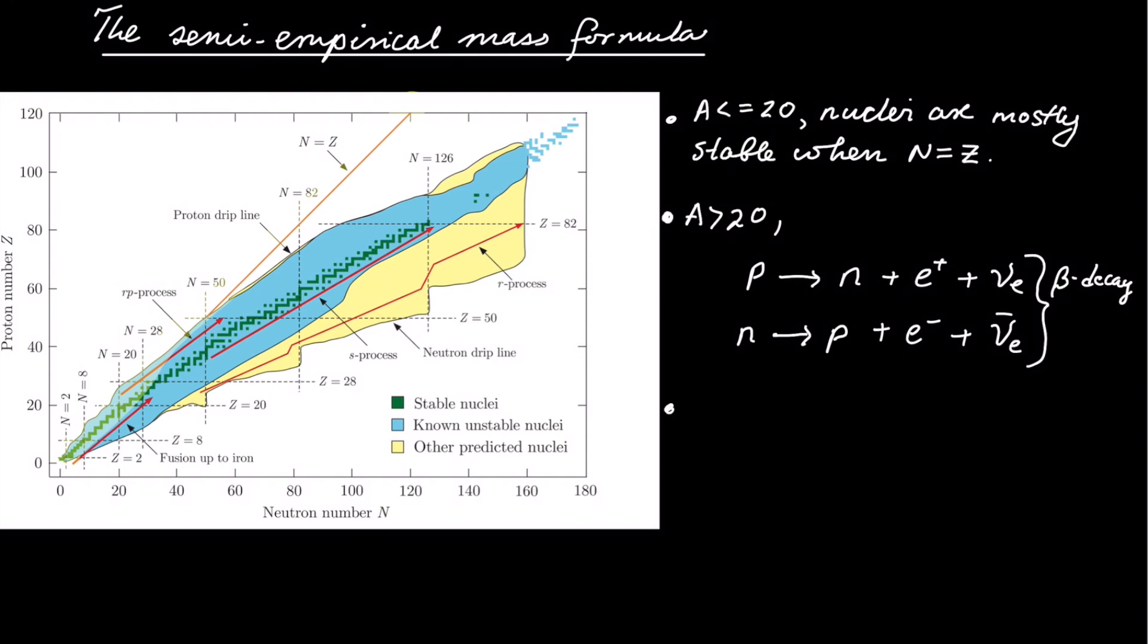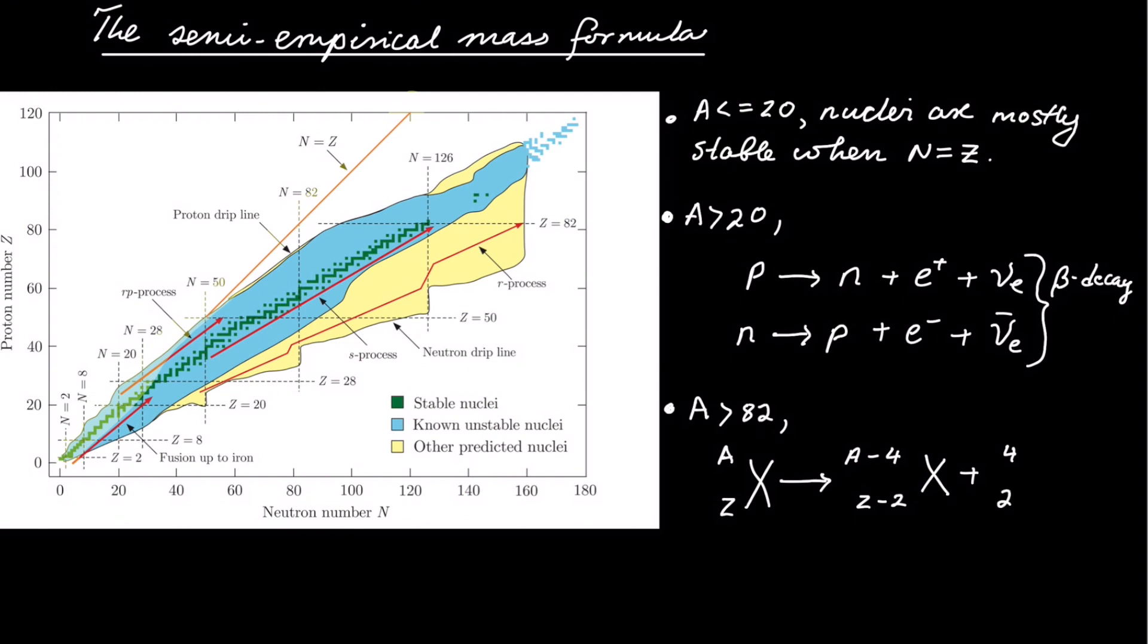Now we increase this further, say above 82 neutrons, then you start shedding off some mass through alpha decay. And we've already said that an alpha decay is basically just a helium atom.